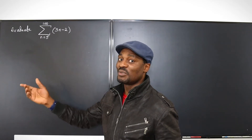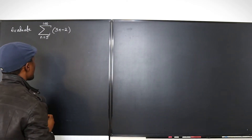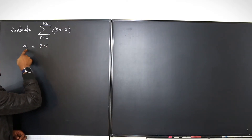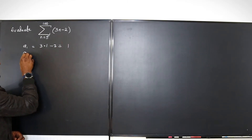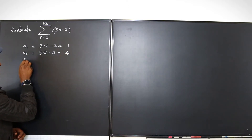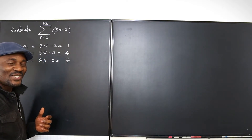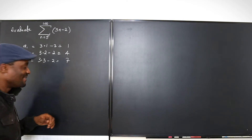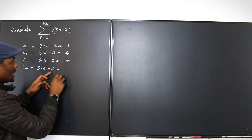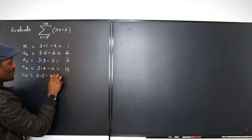I'd rather find the first four terms and the fifth term so I can tell if it's arithmetic or geometric. So a1 = 3(1) − 2 = 1. Then a2 = 3(2) − 2 = 4. a3 = 3(3) − 2 = 7. a4 = 3(4) − 2 = 10. And a5, which is where we're starting from, is 3(5) − 2 = 13.